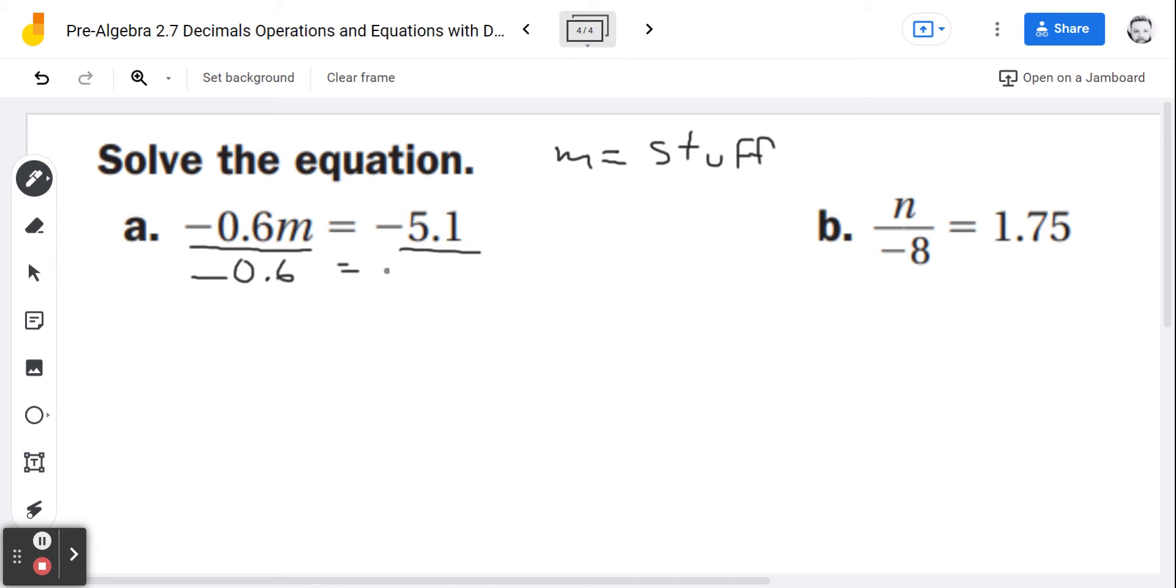Whatever I do on one side, I have to do on the other, right? And I wrote it different both ways because sometimes kids will ask me, do I have to write 0.6? Well, that's good practice, but can you write negative 0.6? Yeah, it's the same thing.